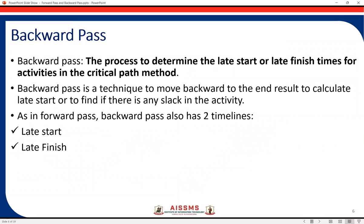Before calculating the backward pass, we first understand what it is exactly and what timelines are involved. The backward pass is a process to determine the late start or late finish times for activities in the critical path method. It is a technique to move backward from the end result to calculate the late start or to find if there is any slack or float in the activity — meaning any time by which a particular activity can delay without delaying the succeeding activity or overall project duration.